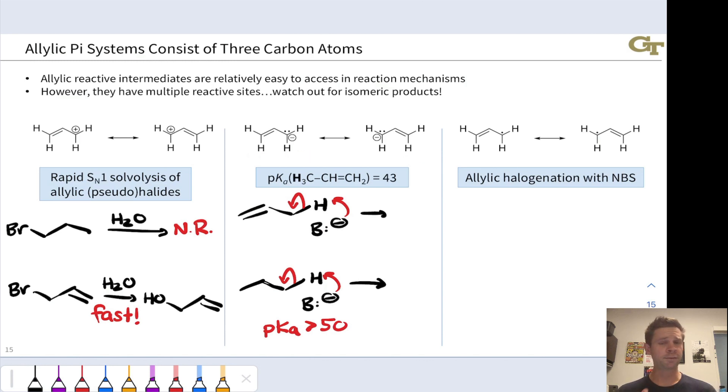Finally, a radical example here, allylic halogenation with NBS. Here, I'm showing an example with some allylic positions, but also some just plain vanilla alkyl carbons. If you hit this molecule with N-bromosuccinimide, it's going to brominate selectively at the allylic positions.